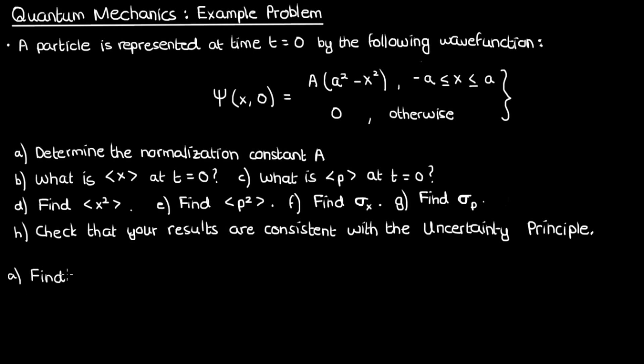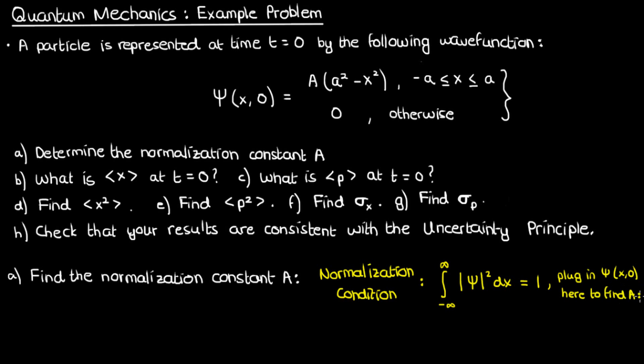The first part asks us to find the normalization constant A of this wave function. We know from the normalization condition that if we integrate |ψ|² over the entire domain, we get one. This means we can plug ψ into the normalization condition, perform the integration, and use the fact that our integral equals one to determine A.